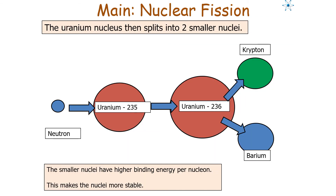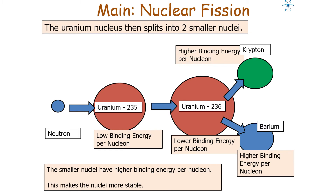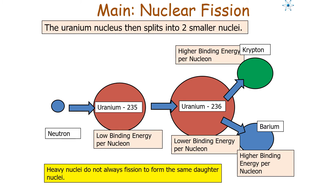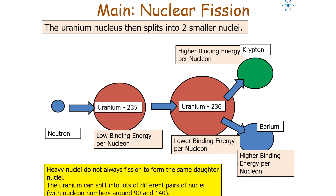The uranium nucleus then splits into two smaller nuclei, which have a higher binding energy per nucleon, making them more stable. Heavy nuclei do not always fission to form the same daughter nuclei — uranium can split into many different pairs, with mass numbers of around 90 to 140.